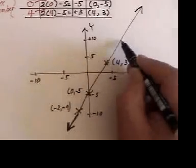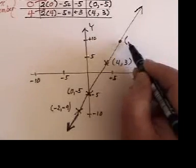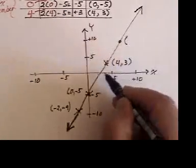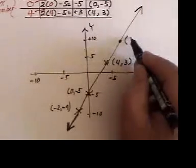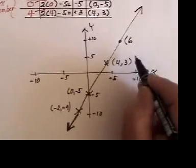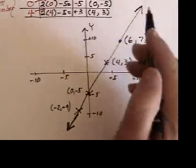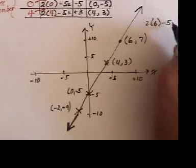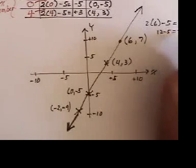Any point on that graph should solve the original equation. For instance, here is a point. I've drawn 6 across. 6 across. And it ends up going 7 up. And sure enough, 2 times 6 minus 5 equals 7. 12 minus 5 equals 7. 7 equals 7.